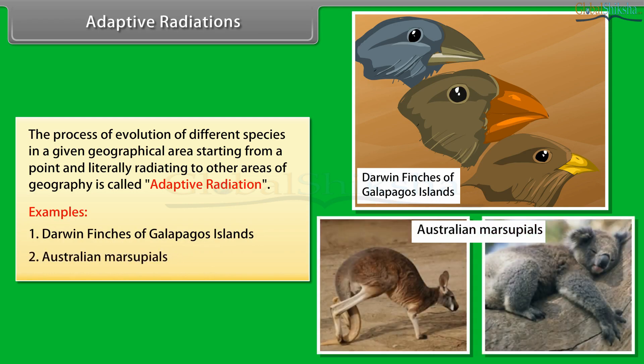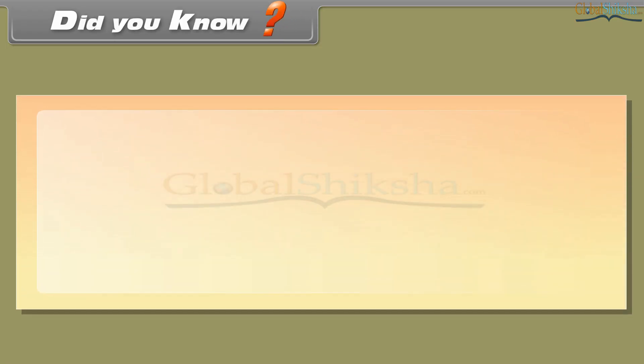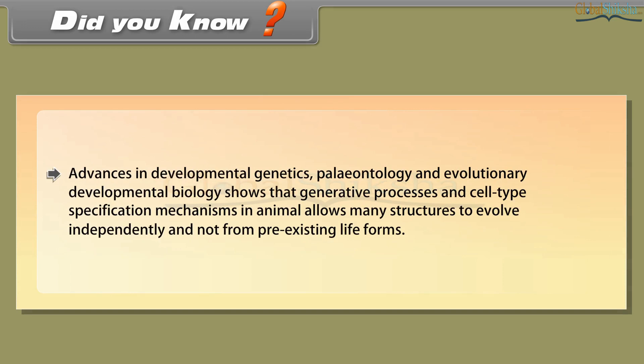Did you know? Advances in developmental genetics, paleontology and evolutionary developmental biology show that generative processes and cell type specification mechanisms in animals allow many structures to evolve independently and not from pre-existing life forms.